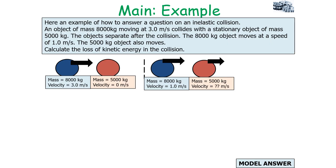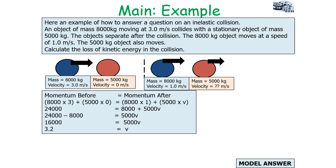An object of mass 8,000 kg moving at 3 m/s collides with a stationary object of mass 5,000 kg. The objects separate; the 8,000 kg object moves at 1 m/s afterwards. Calculate the loss of kinetic energy. First, find the missing velocity: momentum before = 8,000 × 3 + 5,000 × 0 = 24,000 kg·m/s. Momentum after: 8,000 × 1 + 5,000v = 24,000. So 5,000v = 16,000, therefore v = 3.2 m/s.